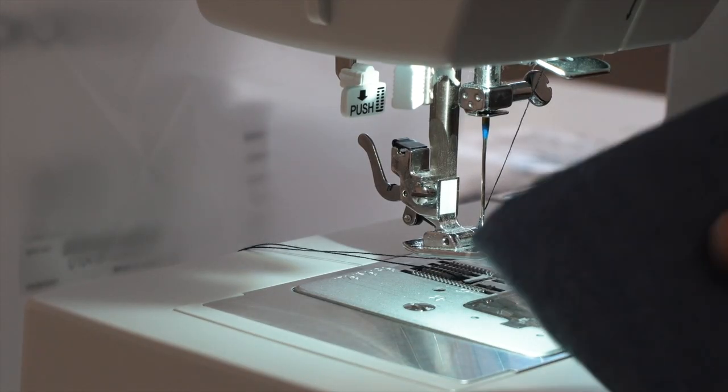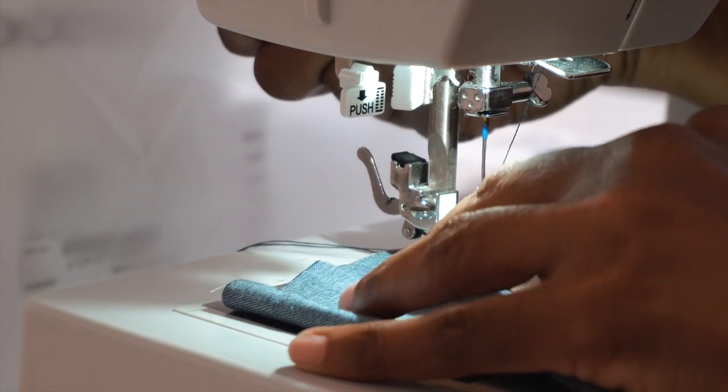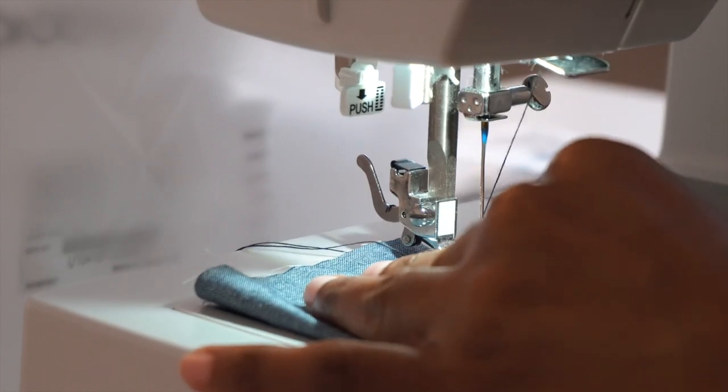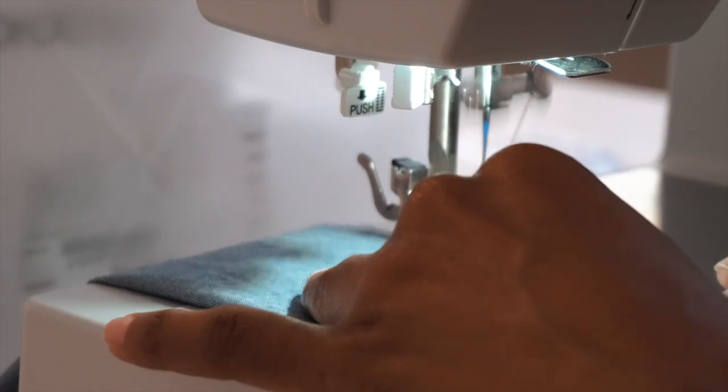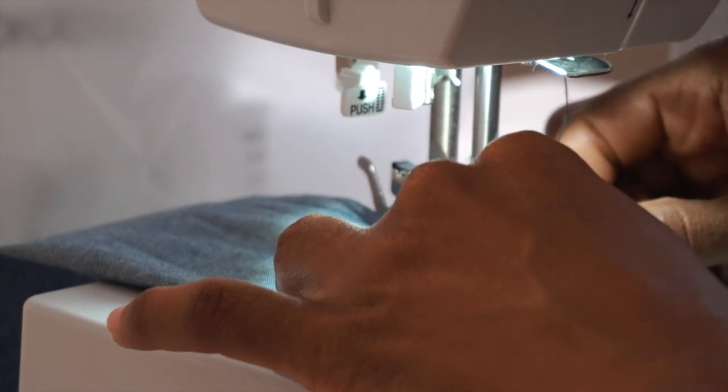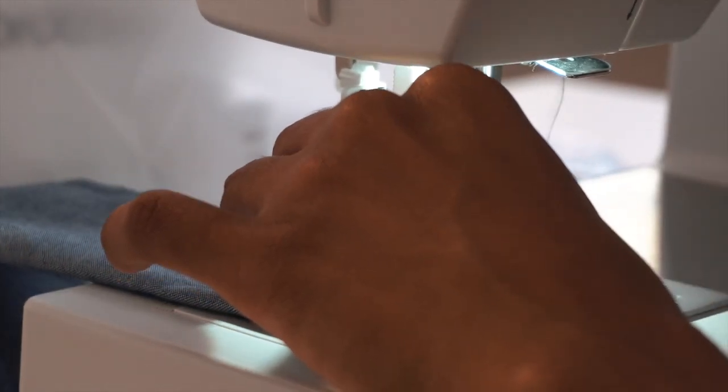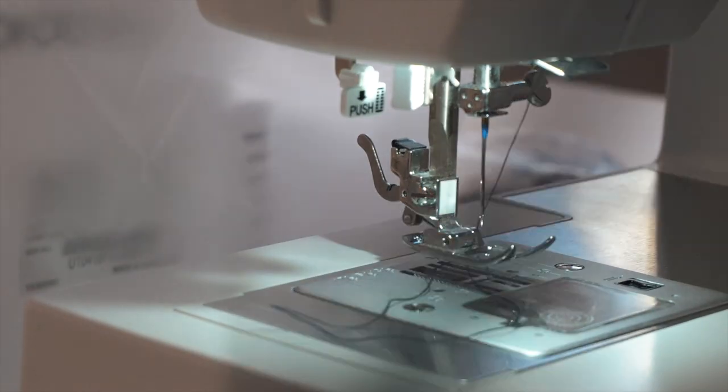So now I'm just going to stitch my scrunchie together with a straight stitch starting at that one inch point. Don't forget to backstitch. Finish off with a backstitch. So this is how my scrunchie tube looks post sewing. Remember you leave this one inch opening at both ends.